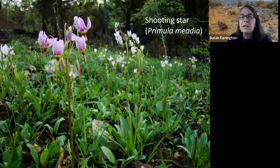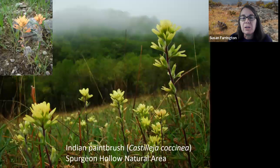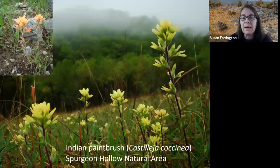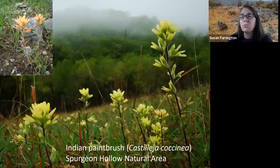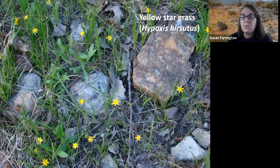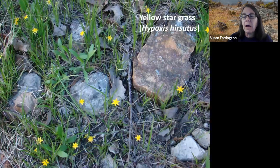Shooting star thrives in glade seeps in spring, but by midsummer its leaves have gone completely dormant. Indian paintbrush is an annual or biennial — it blooms in seepy areas in spring, then sets seed and dies. New seedlings emerge in summer or fall and bloom the following spring. It's also a hemiparasite, deriving some of its nutrients from plants it associates with. Yellow star grass, which is really a miniature member of the iris family, blooms early and then goes dormant, waiting out the hot, dry summer.